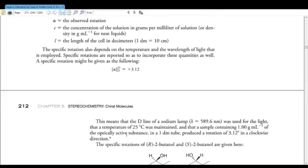One decimeter is equal to 10 centimeters. Anybody that's taken general chem and has seen spectrophotometry will be familiar with our friend, the decimeter. The specific rotation also depends on the temperature and the wavelength of light that is employed. It also depends on the solvent. Specific rotations are reported so as to incorporate these quantities as well. A in brackets tells us the specific rotation. D means that it's the D line of a sodium lamp, so the light has a wavelength of 589.6 nanometers. The temperature is 25°C. The sample contained one gram per milliliter of the optically active substance in a one decimeter long tube, and it produced a rotation of 3.12 degrees in a clockwise direction. So now, for the rest of your life, when you see this shit, you will remember this video.